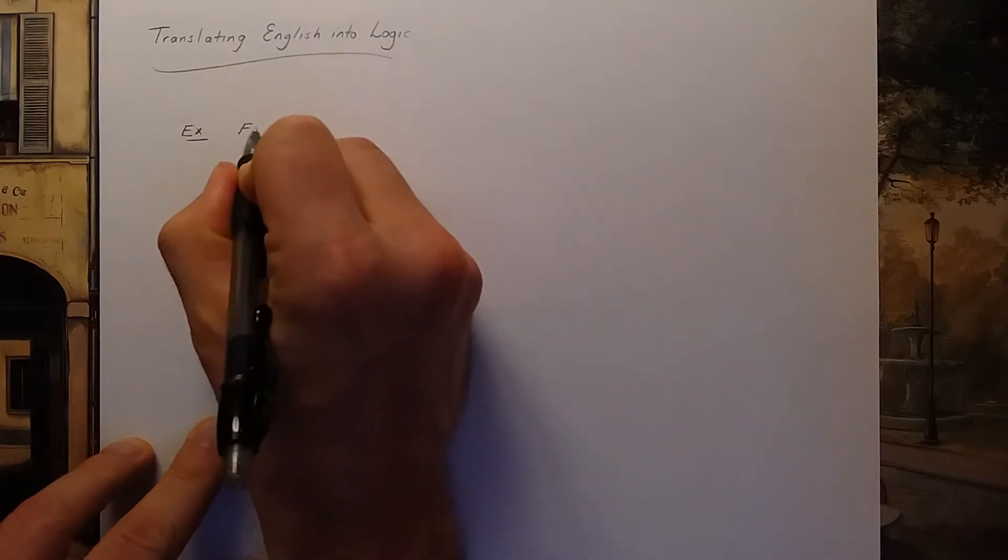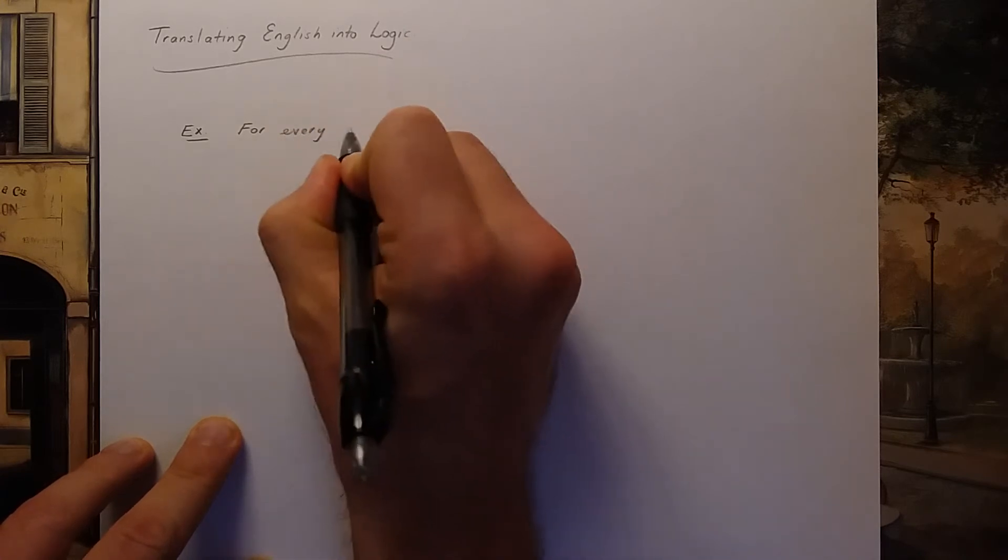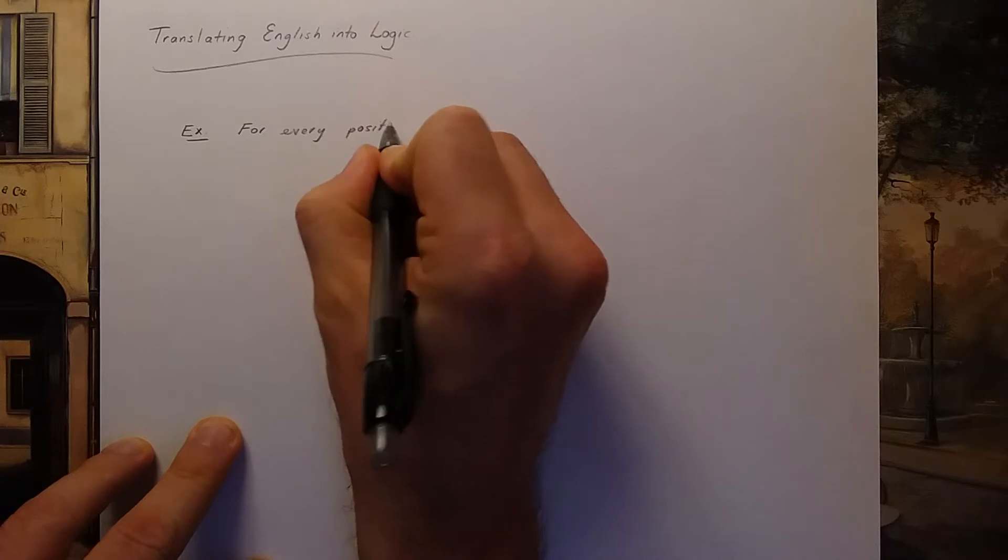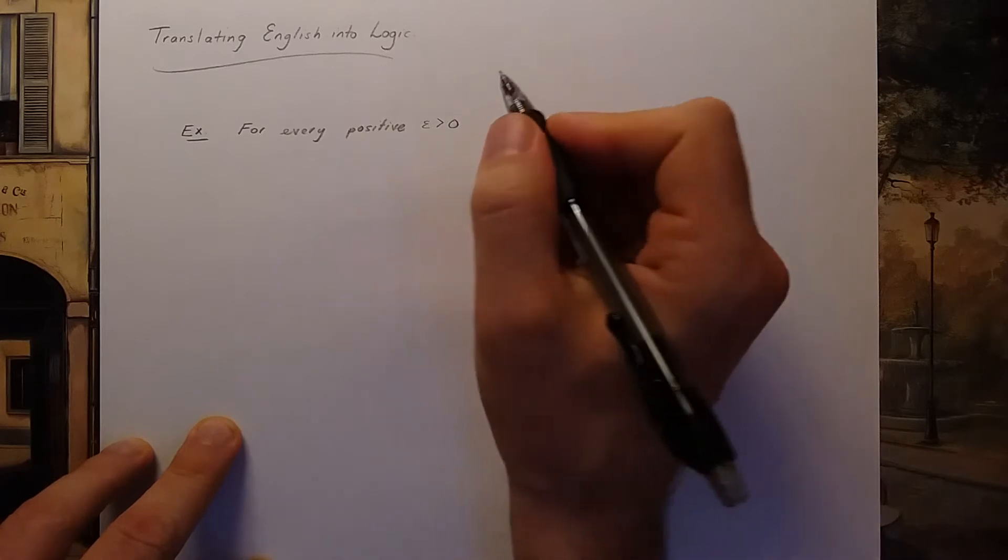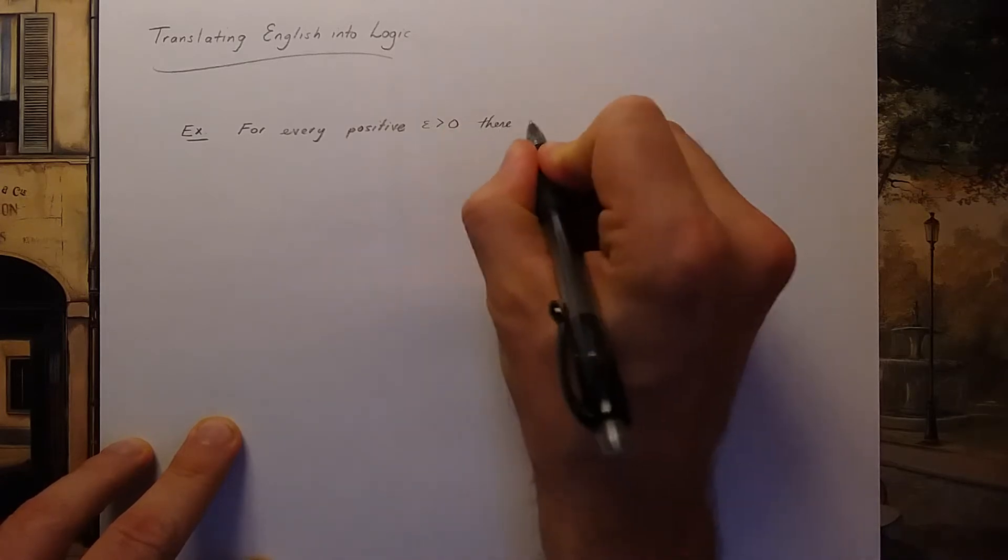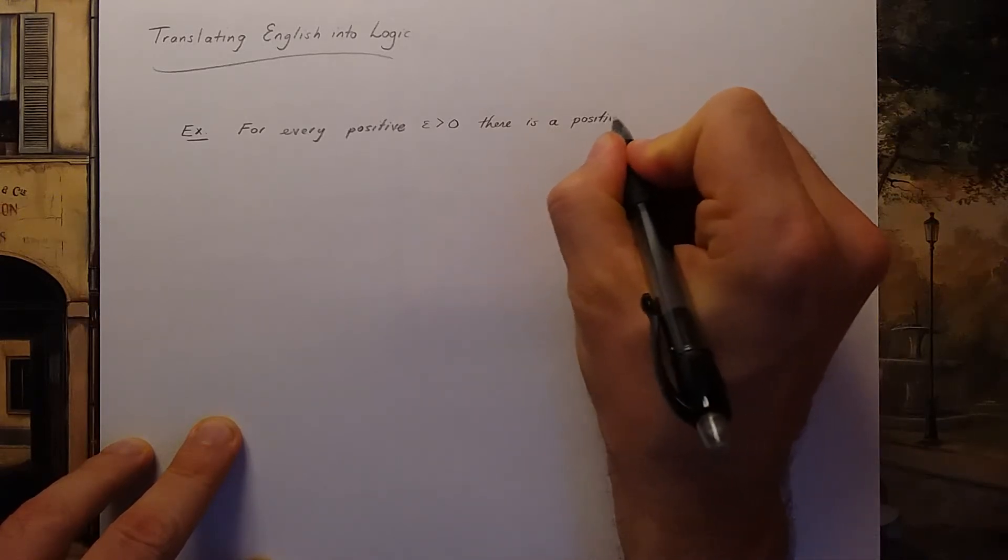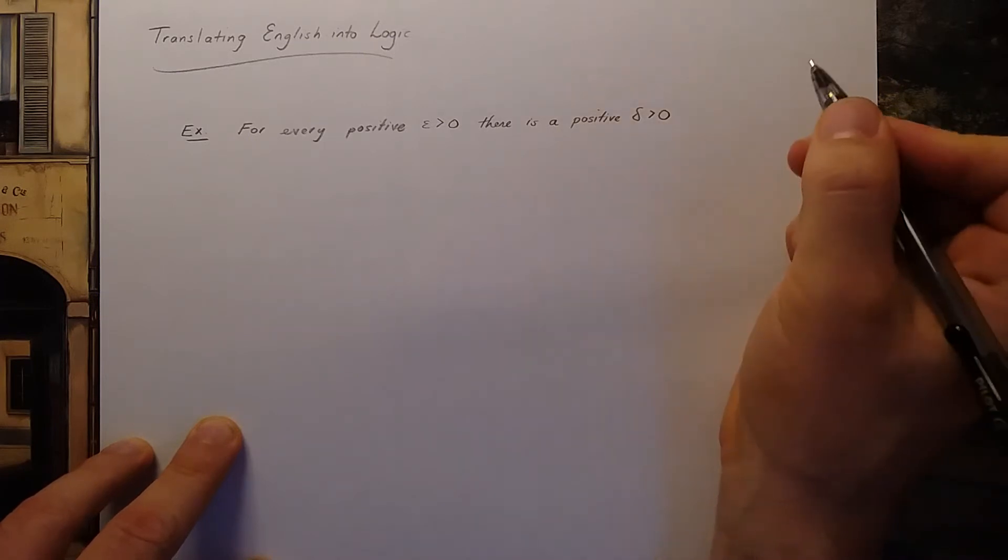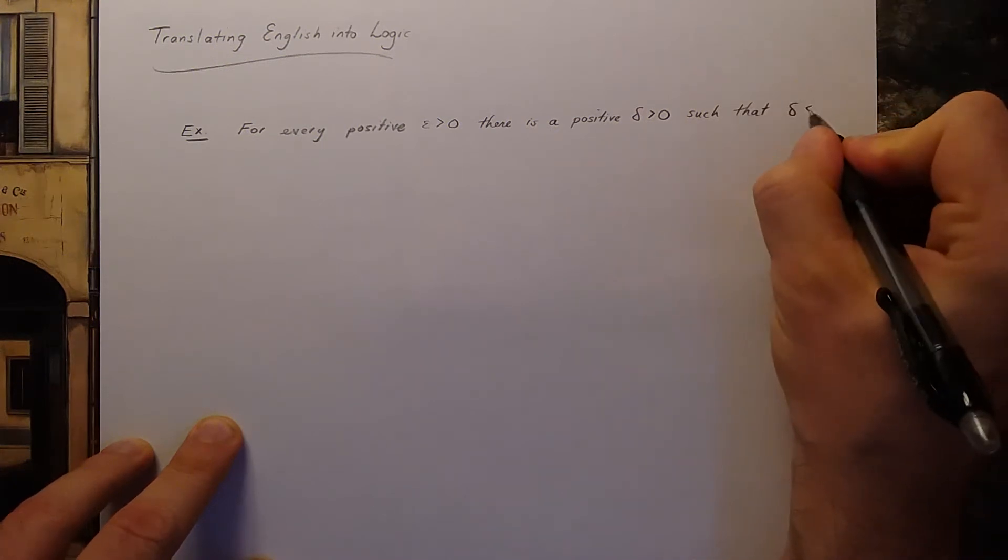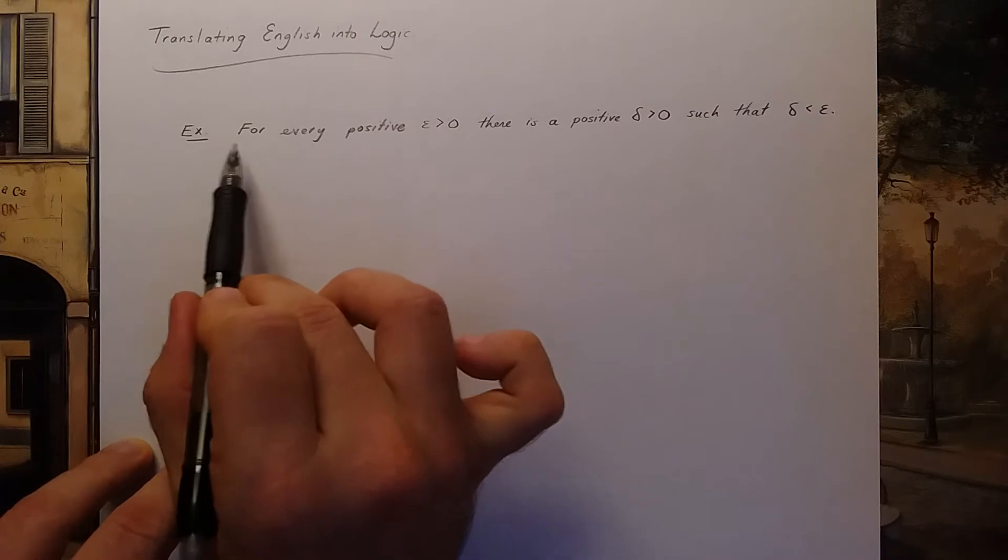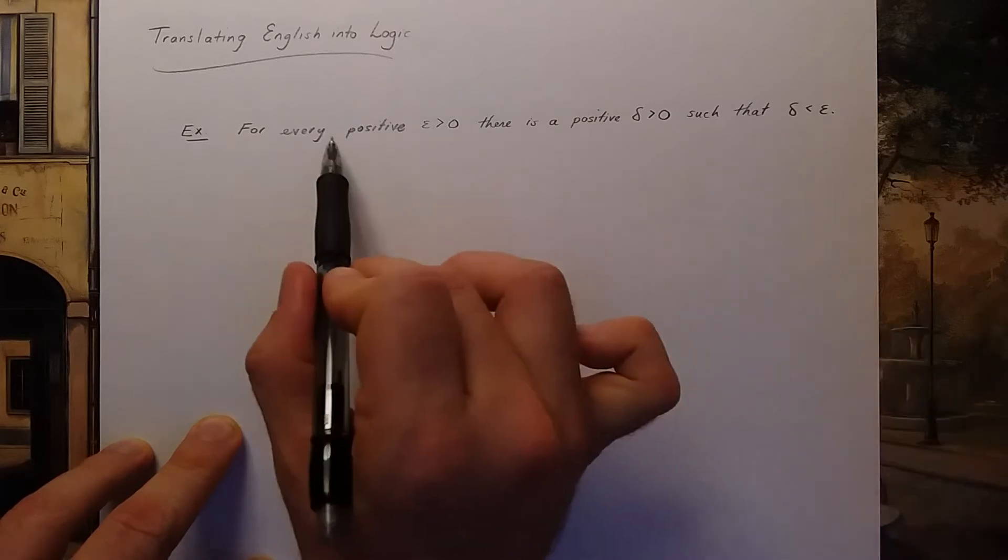Let's think about the sentence: for every positive Greek letter epsilon bigger than zero there is a positive delta bigger than zero such that delta is less than epsilon. If you take a course on real analysis you'll start to see sentences that look something similar to what I'm showing you here.